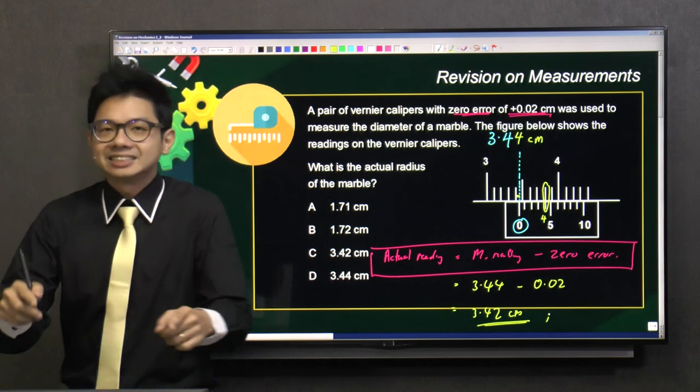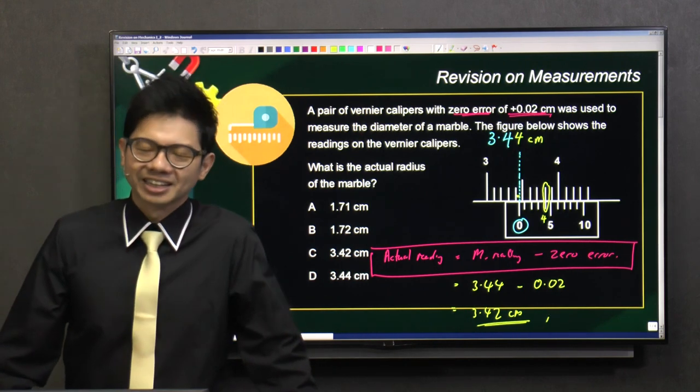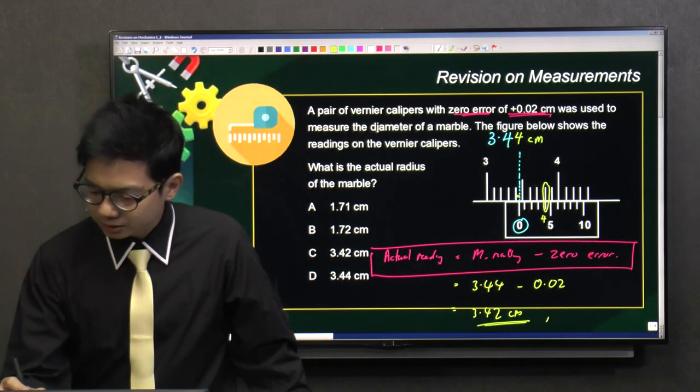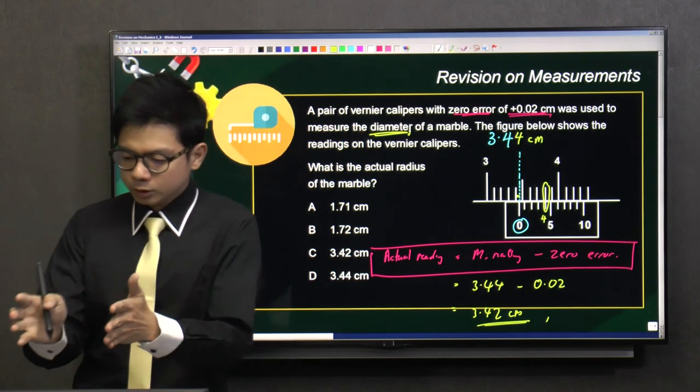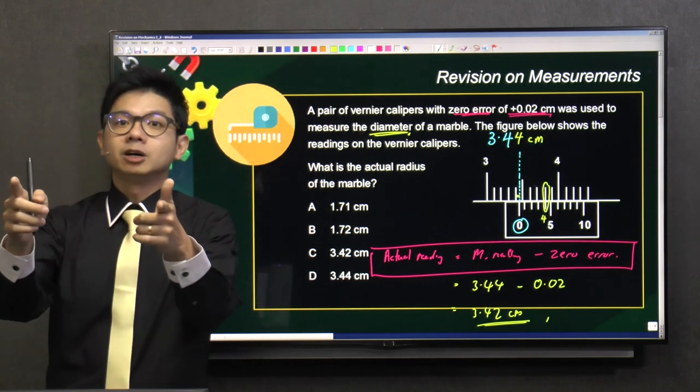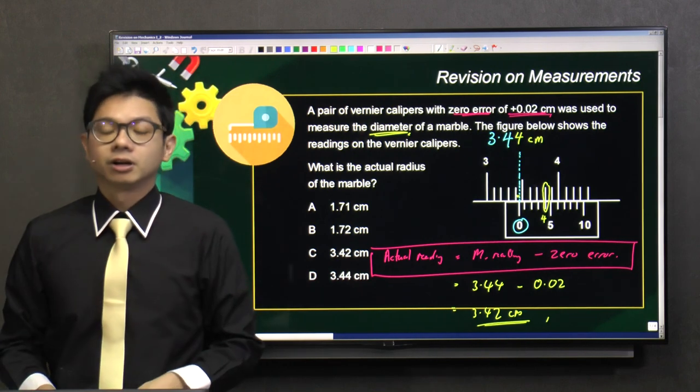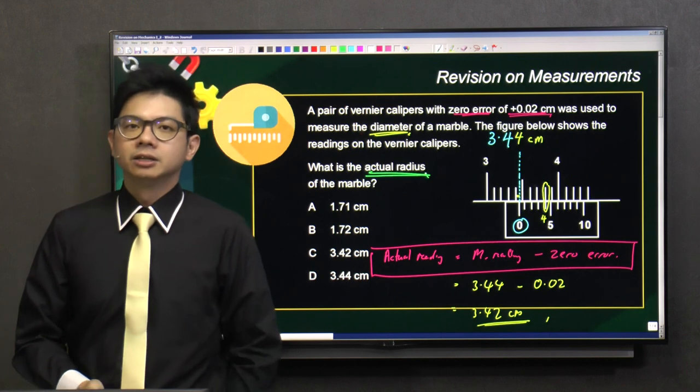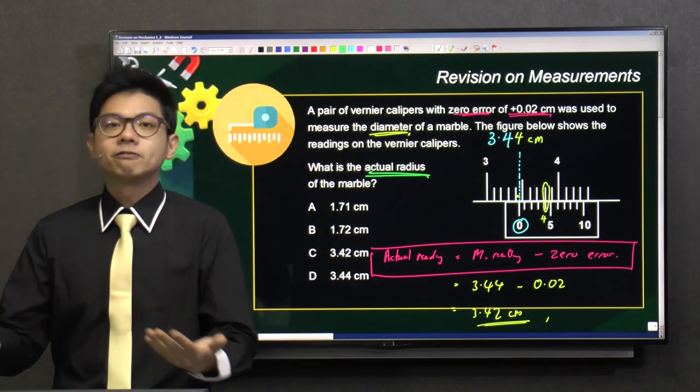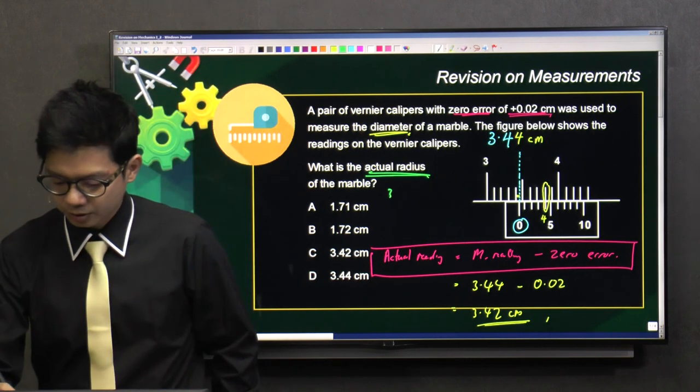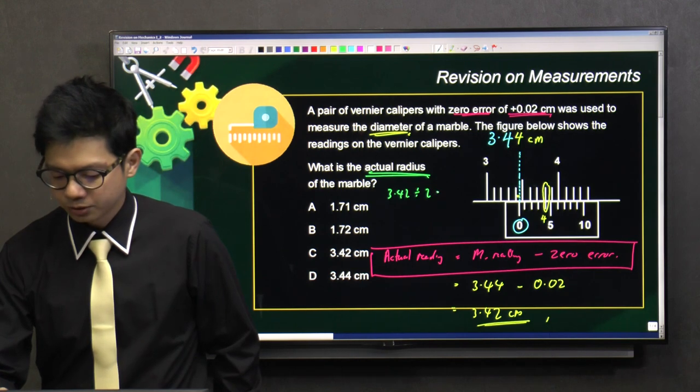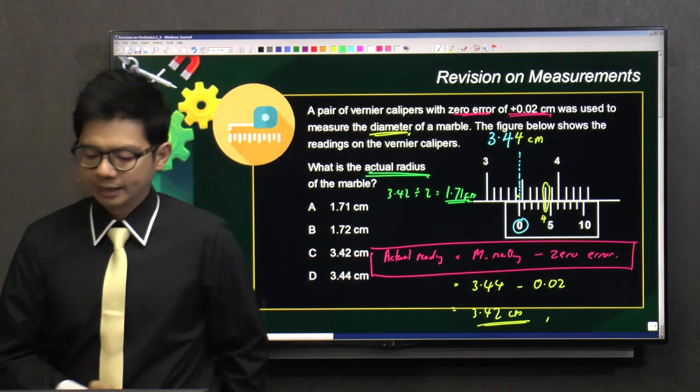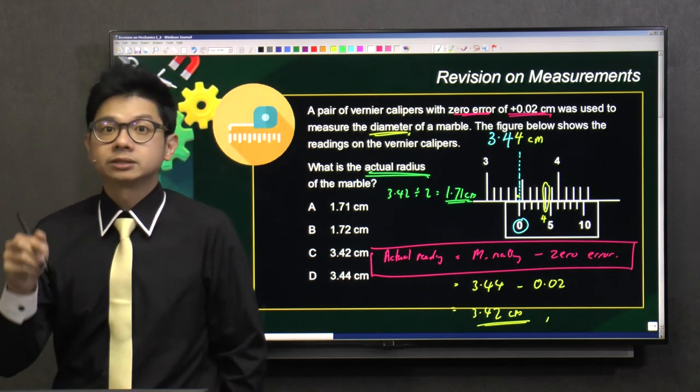And guys, is this the final answer? Not yet, because I told you this question is very tricky. Why? Because it's used to measure the diameter of a marble. But what did the question ask you for? What is the actual radius? So what you have to do here, 3.42, you have to divide by 2, then you will get 1.71 cm. And this is the actual radius of the marble.